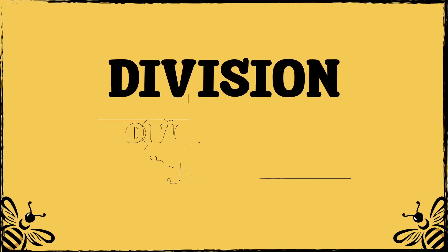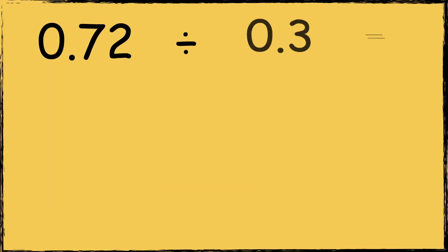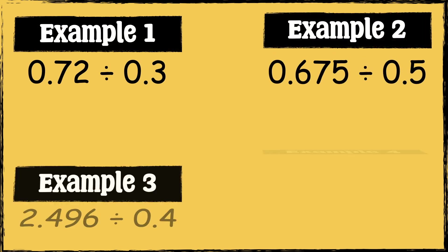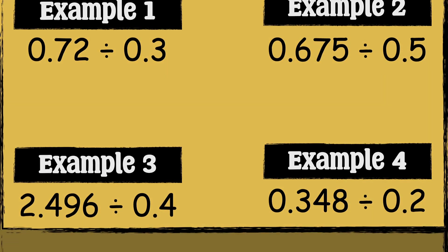In this video we'll be dividing decimals by decimals. The method I'm going to use is to multiply the decimal numbers first so that the divisor becomes a whole number. Having a whole number to work with will make the process easier. I'm going to work through four different examples. If you'd like to have a go yourself, pause the video and press play when you're ready. Here is a calculation: 0.72 divided by 0.3.